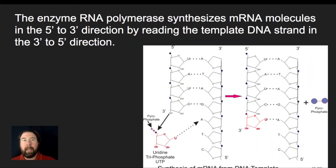Now, we can see that the enzyme RNA polymerase is going to synthesize mRNA molecules from the 5' to 3' direction, as we've mentioned before, because we can only target these hydroxyl groups that are here.